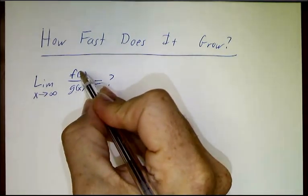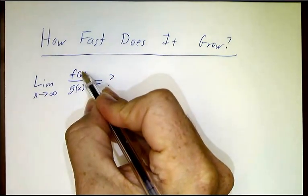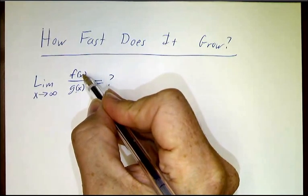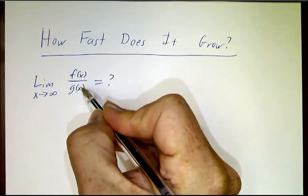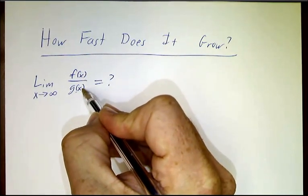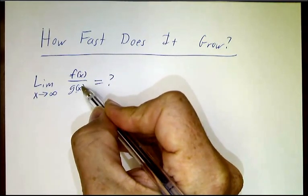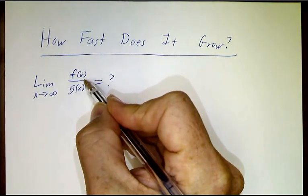So if g is growing and f is growing faster, the limit might be infinity or minus infinity. If f is growing but g is growing faster, the limit's going to be zero. If they're growing at the same rate, then the limit is probably going to be a non-zero number.